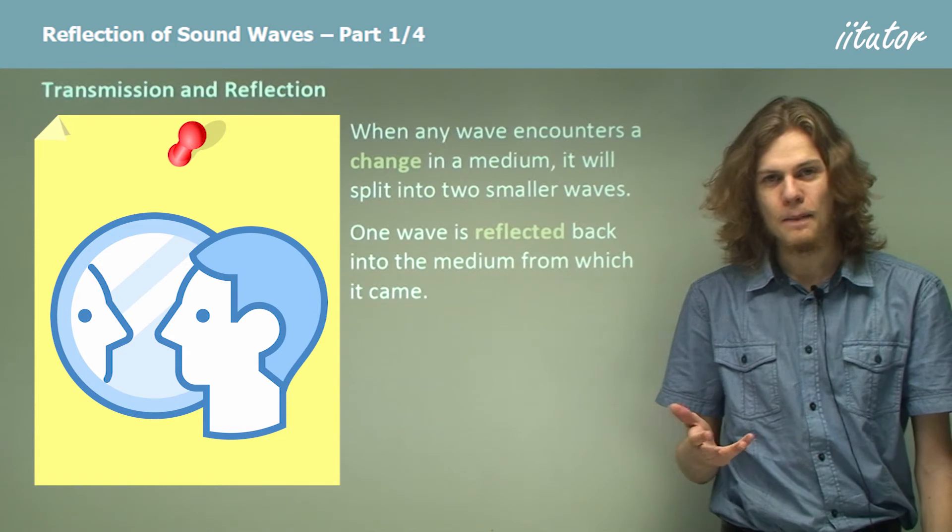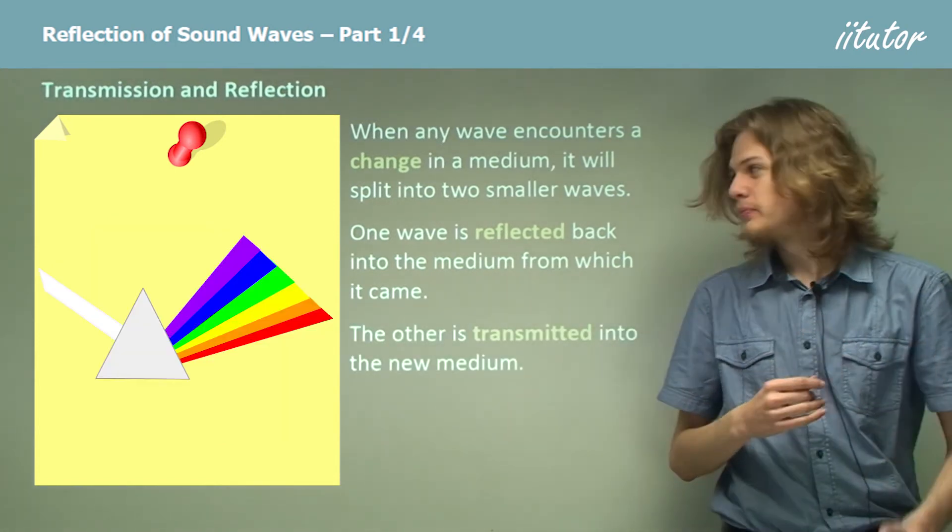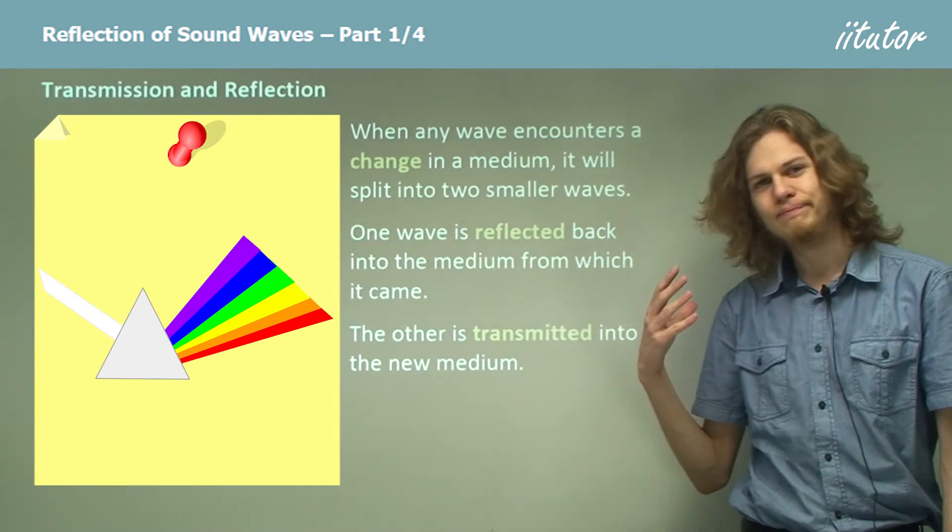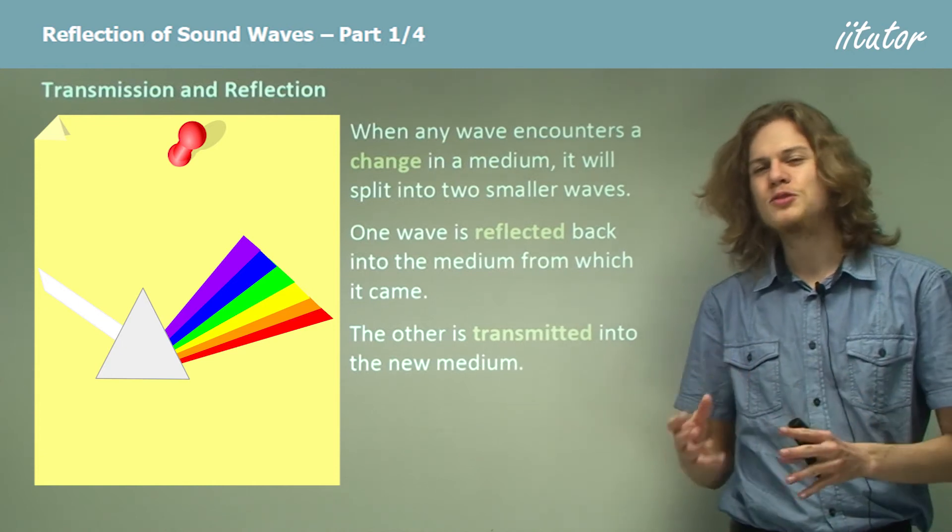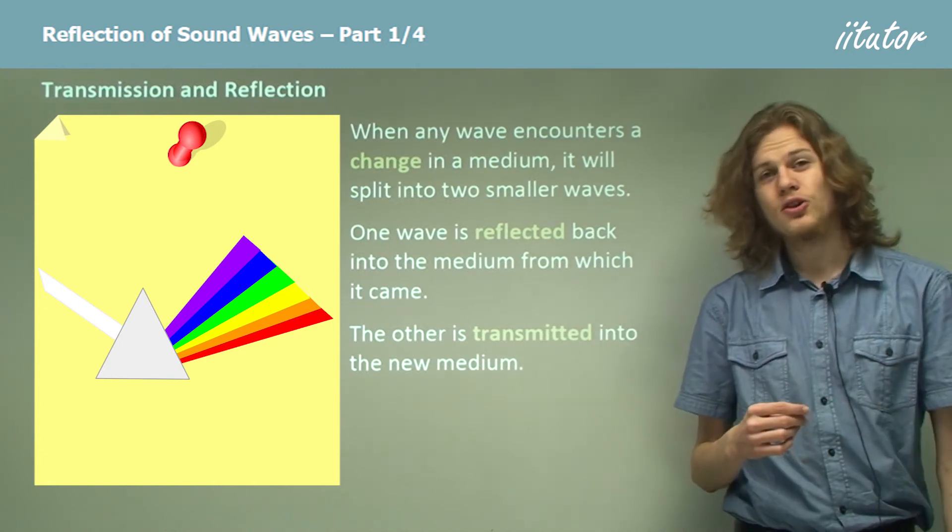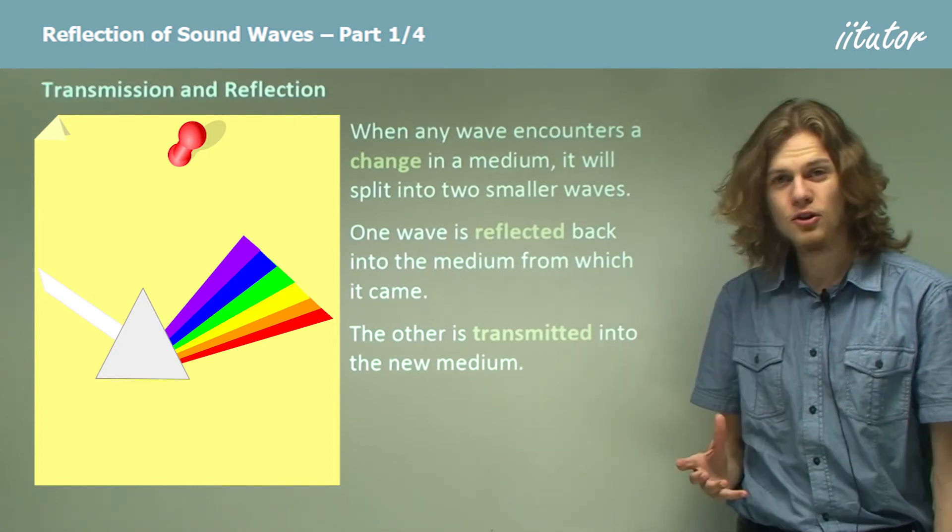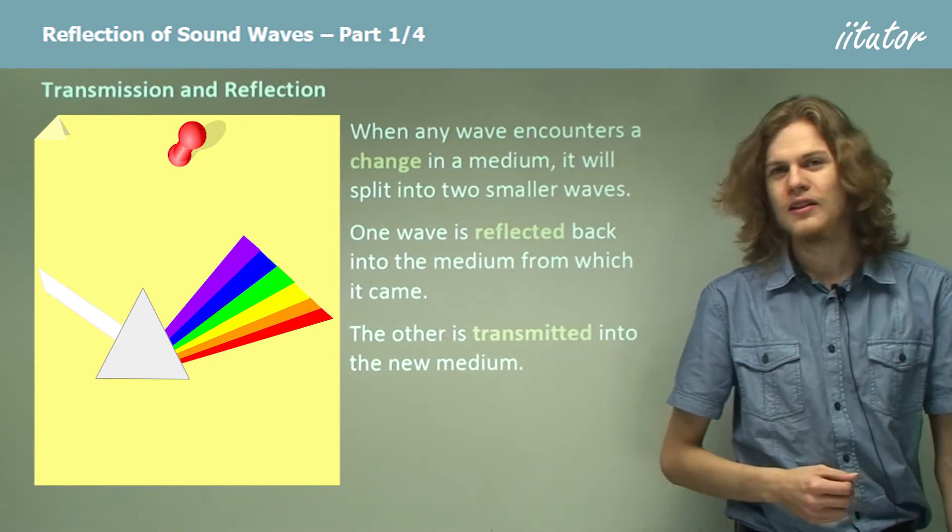The other one is transmitted through the prism and we can see that some light comes out of the right of the picture. So some light has been reflected from the prism and some light has been transmitted through it. It turns out that if we take the total amount of energy in the reflected wave and the transmitted wave, it'll add up to the same amount of energy that we started with. This means that we don't get any energy created or destroyed.